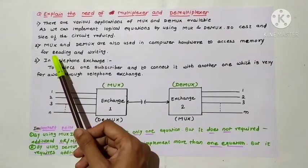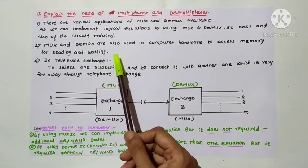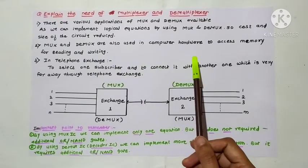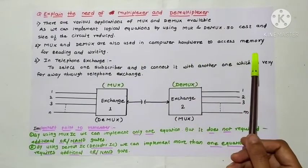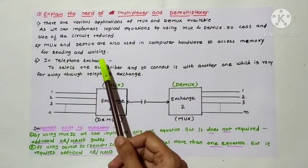Second, multiplexers and demultiplexers are also used in computer hardware to access memory for reading and writing.